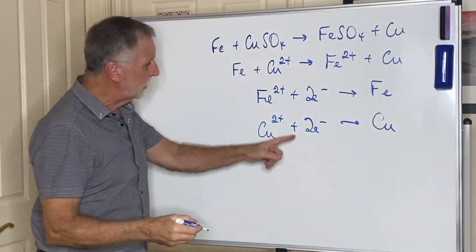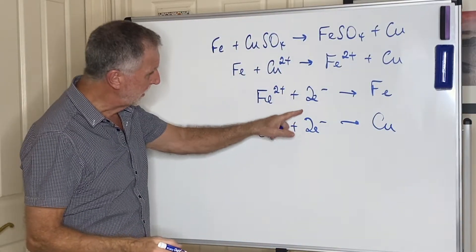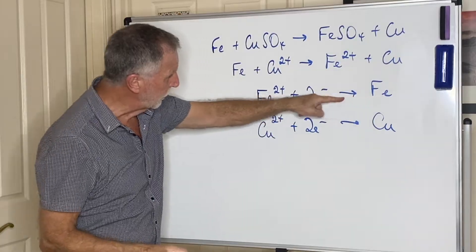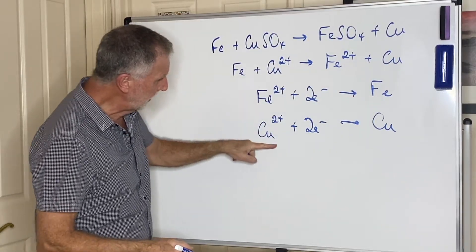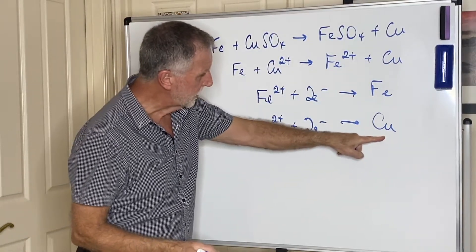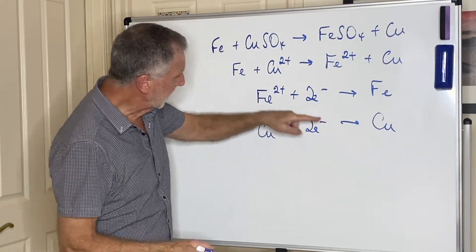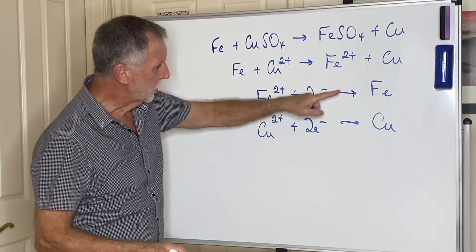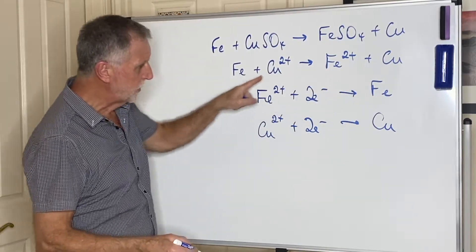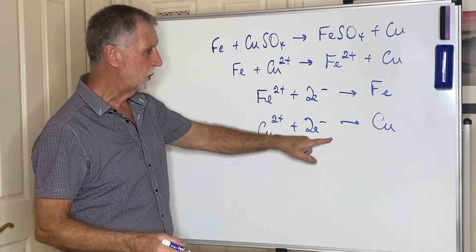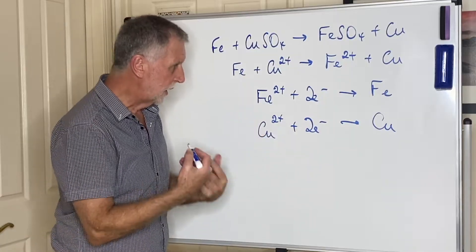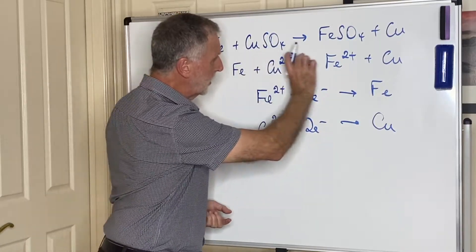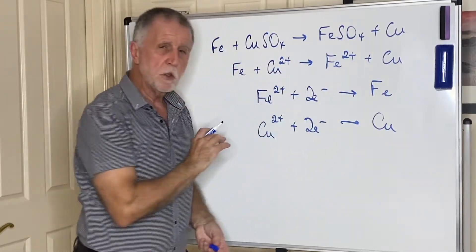In order to combine those two half equations, you simply reverse the iron one and keep the copper one going the same way. Both involve two electrons, so this one gives up two electrons and that one receives two electrons. The electrons cancel, you add them together, and you get the overall equation.